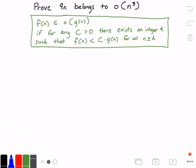So the first thing we need to do is identify our function f(n) and identify our function g(n). So f(n) is going to equal 9 times n — I got that from the problem statement — and g(n) is going to be equal to n cubed, also from the problem statement.